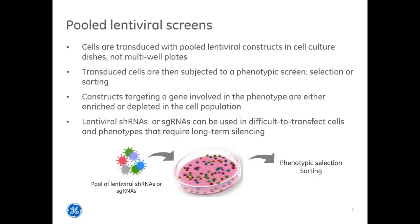I'd like to review some general features of pooled lentiviral screens, whether they are shRNA or sgRNA screens. When performing pooled screens, cells are transduced with pooled lentiviral constructs in cell culture dishes, and then the transduced cells are subjected to a phenotypic screen. These phenotypes are typically those that can be selected or sorted to distinguish hits from non-hits by determining whether constructs are enriched or depleted. An advantage of lentiviral screening is that it can be used in difficult-to-transfect cells and for phenotypes requiring long-term silencing.